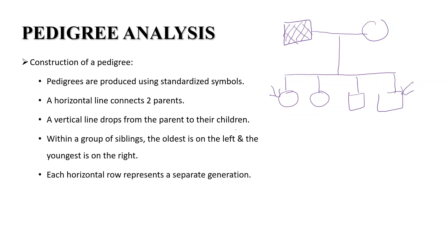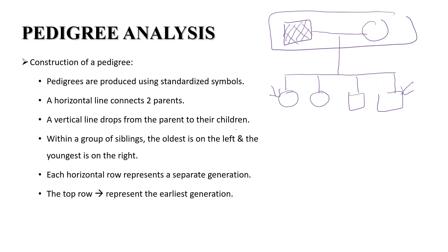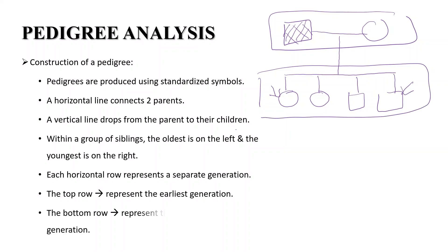Each horizontal row represents a separate generation. The top row represents the earliest generation and the bottom row represents the most recent generation.